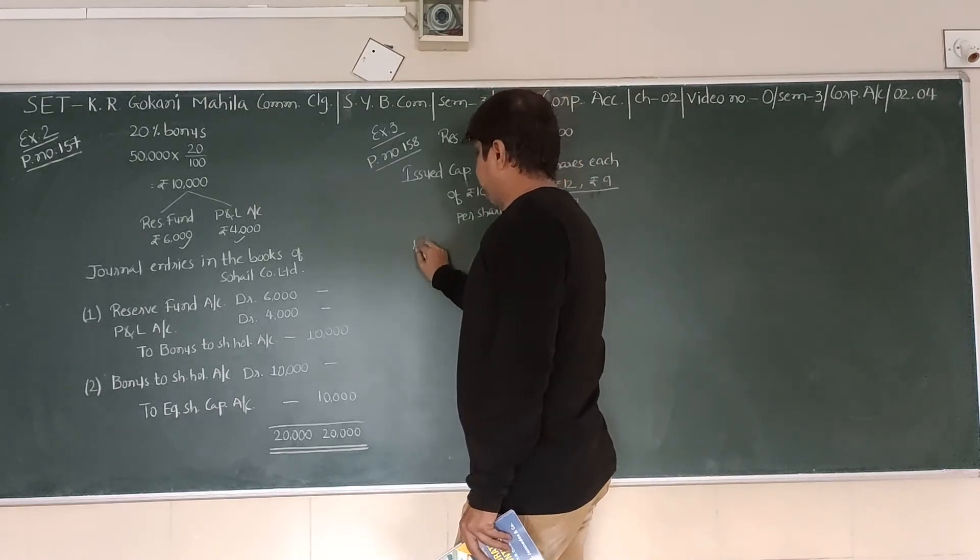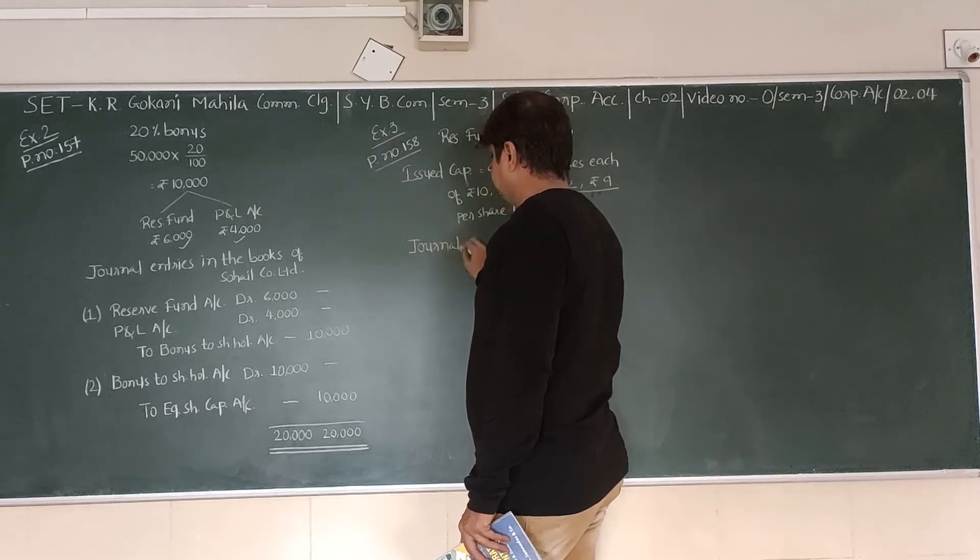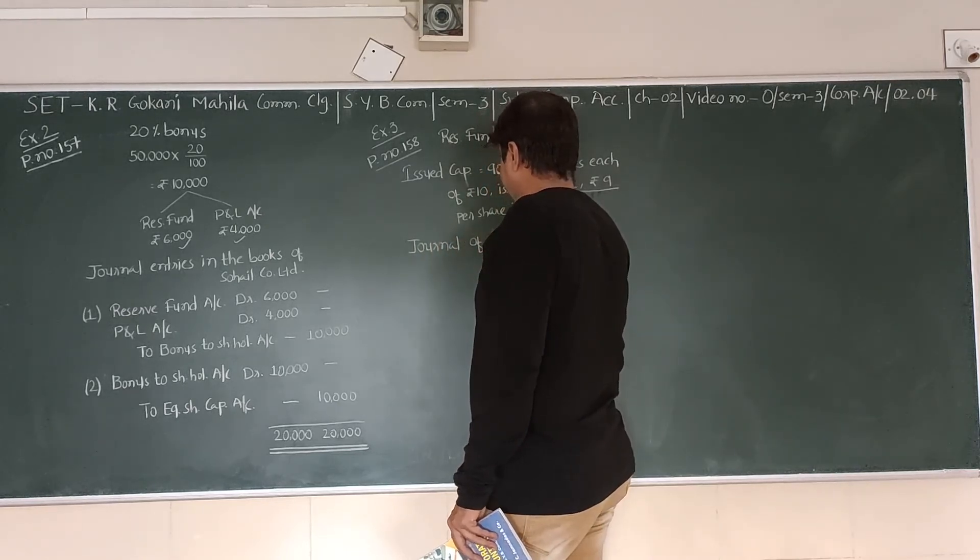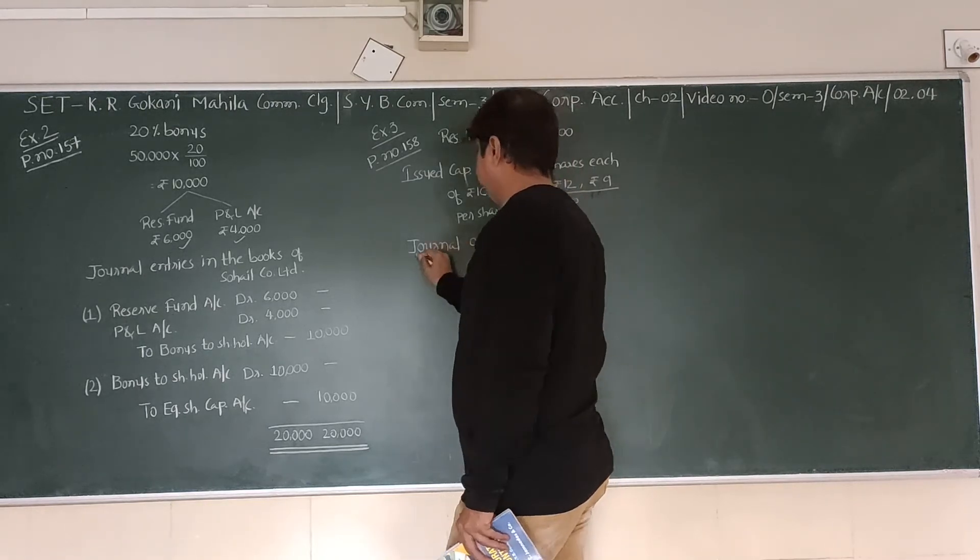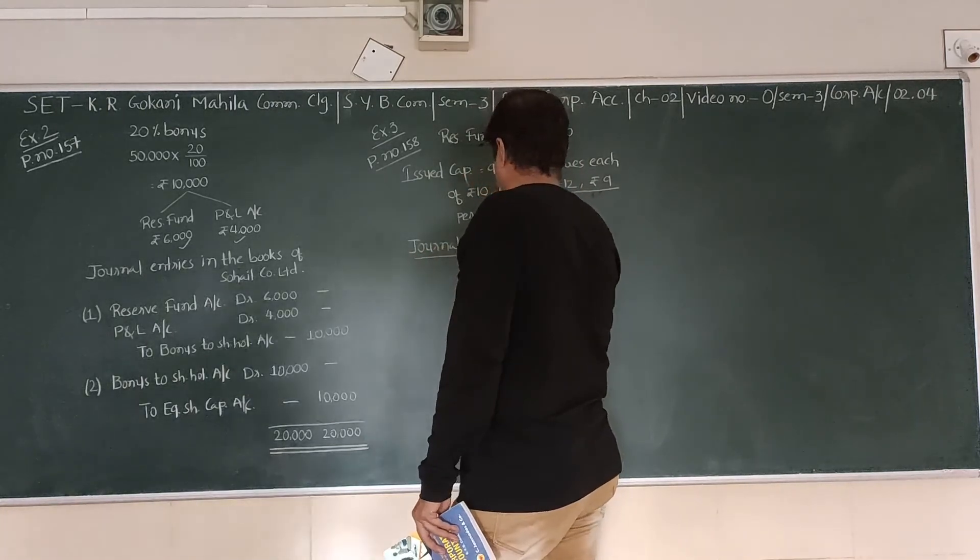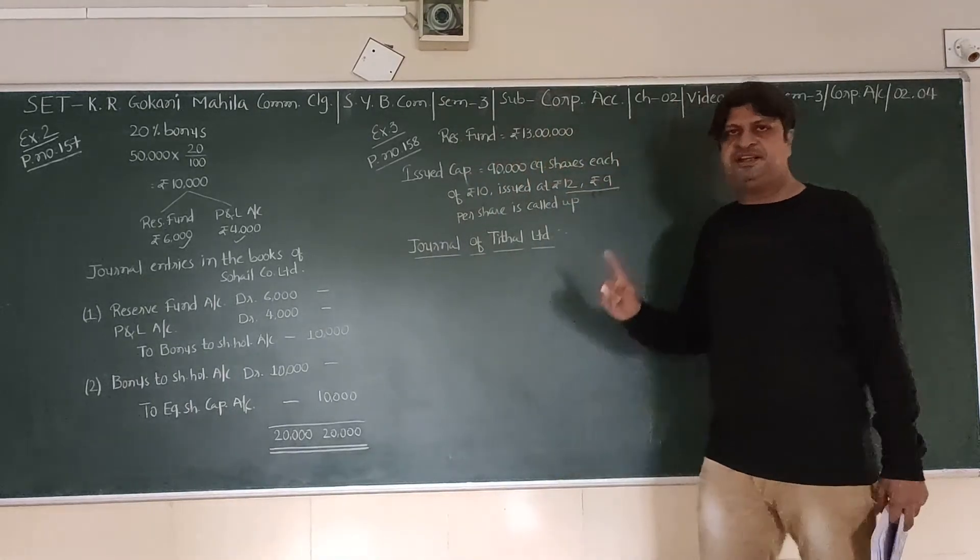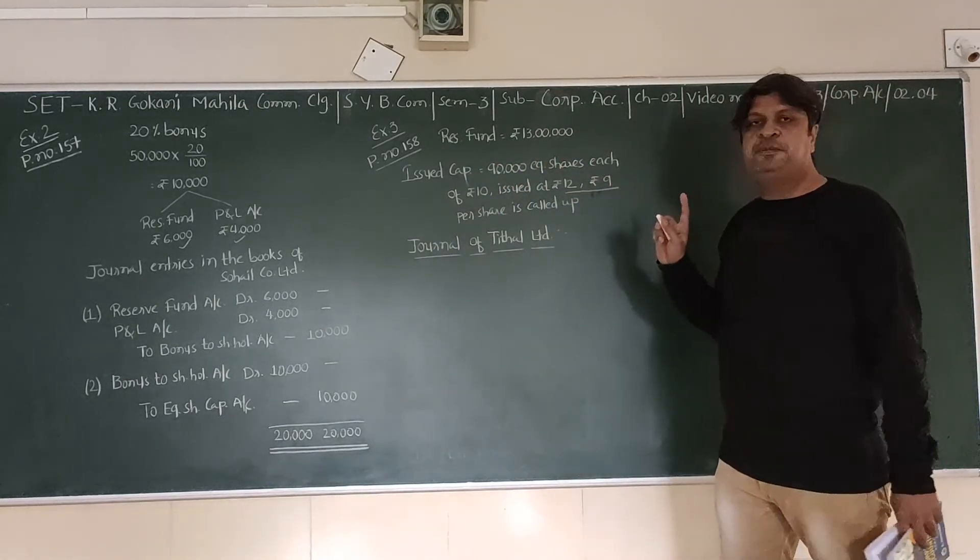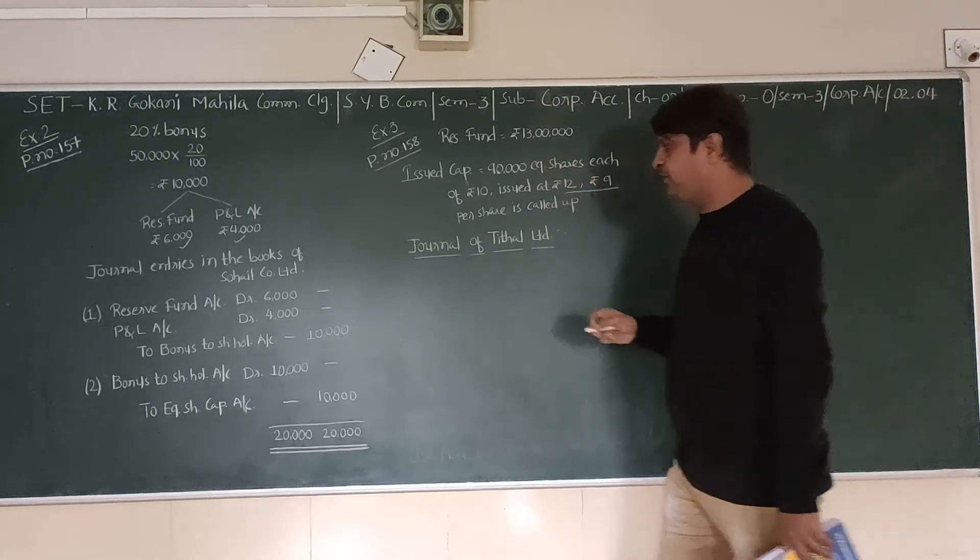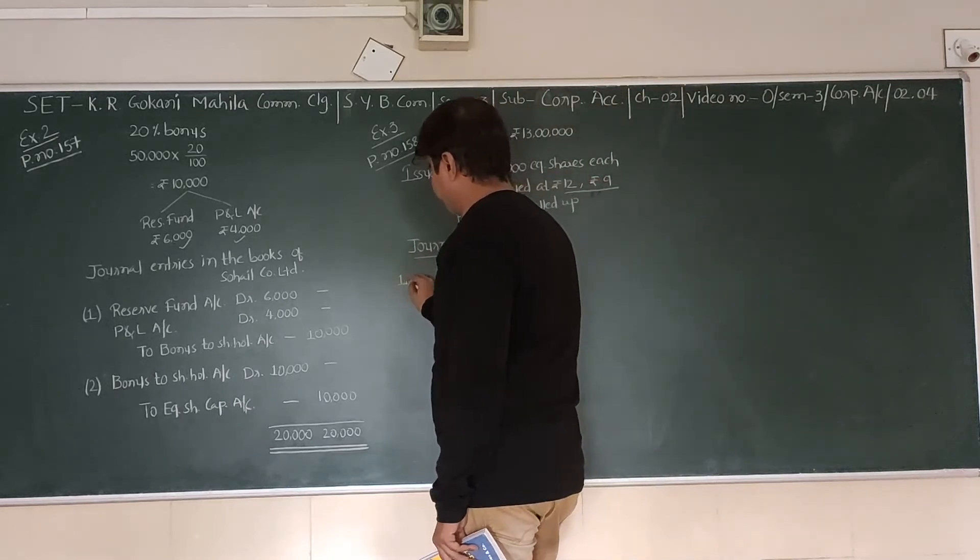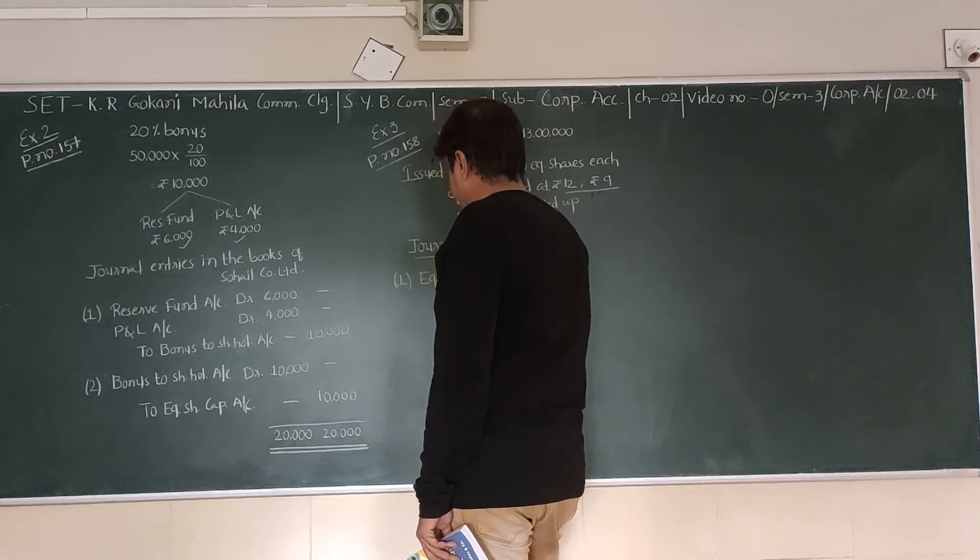Now the company decided to use some part of the reserve to declare bonus by making partly paid-up shares as fully paid-up. Journal entries in the books of Teethal Limited. Three journal entries are to be passed. First entry is to call the amount of final call.